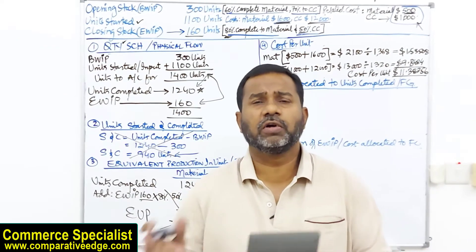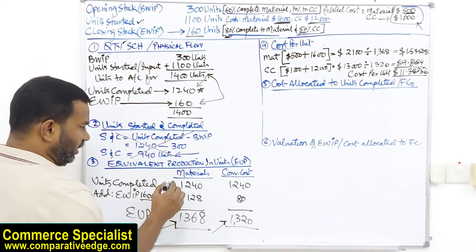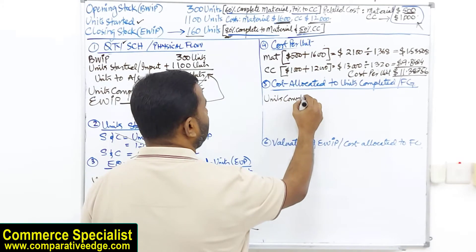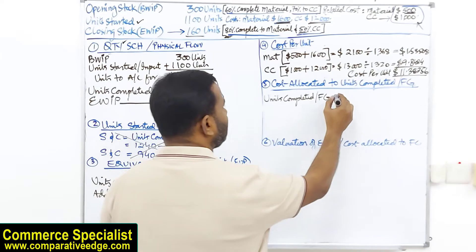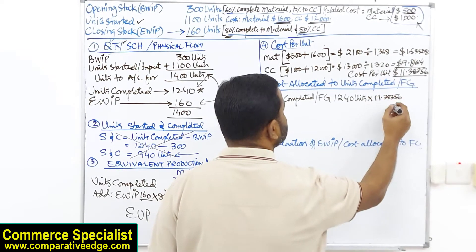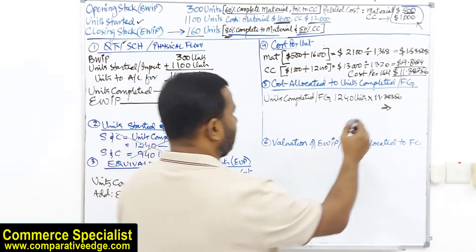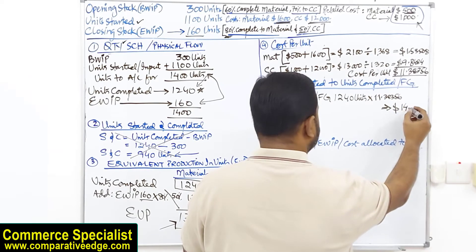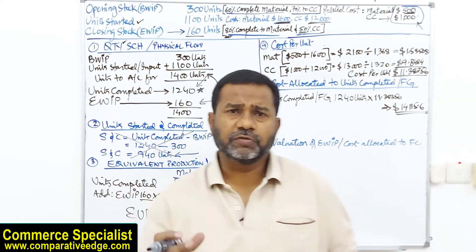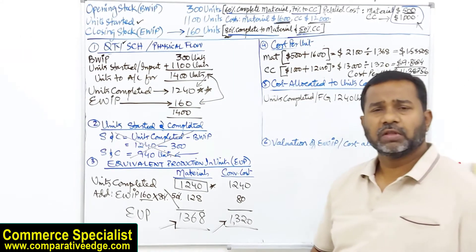Now we allocate cost to finished goods and ending WIP. For finished goods, it is straightforward: take units completed (1,240 units) — also found in the quantity schedule — and multiply by the total cost per unit of $11.3836. This gives the cost of completed units: 1,240 × $11.3836 = $14,115.6.